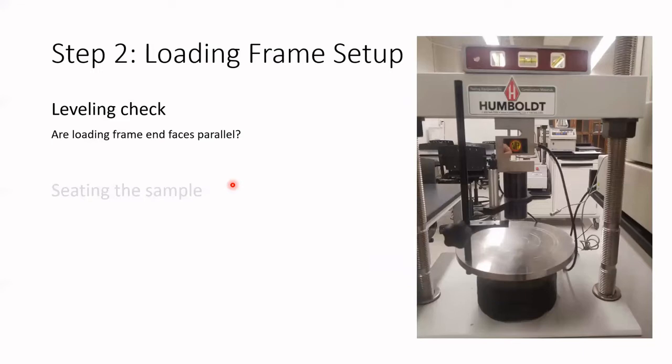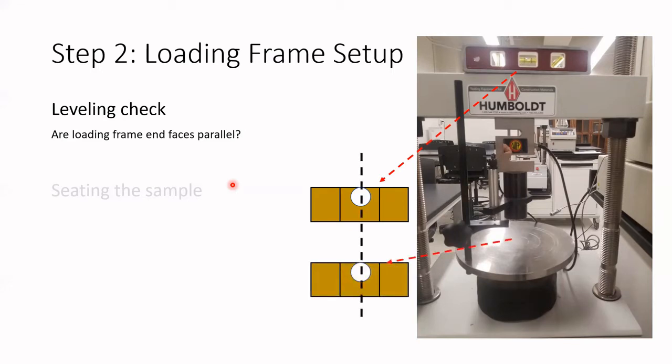Now we are going to check if the frame is properly set up for the work. First, we have to check if the top and the bottom part of the frame are parallel. To check that, we use a level, and what we check is that the level at the top and the bottom are aligned with each other. Then we can proceed to seating the sample.